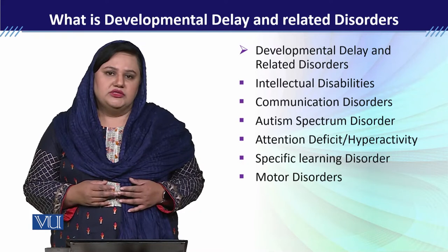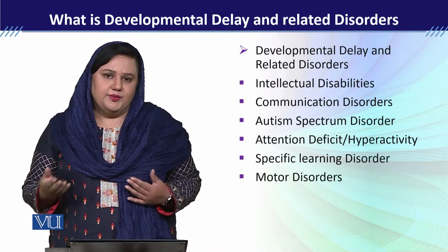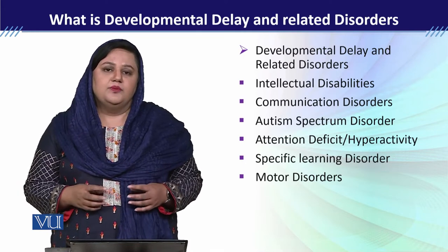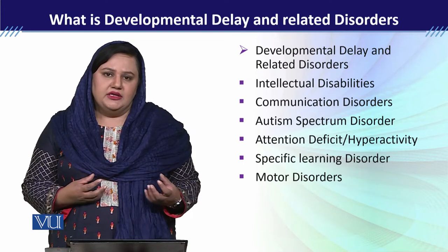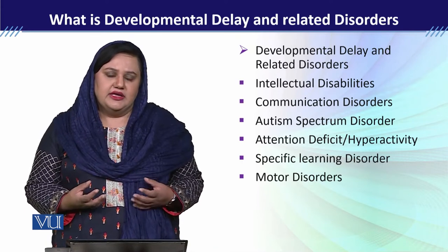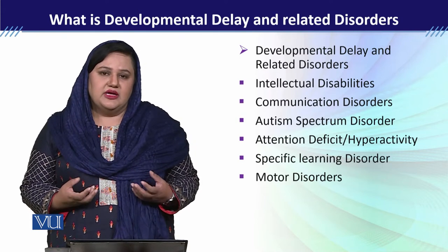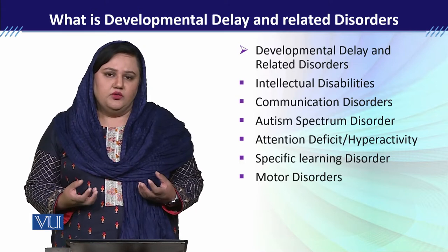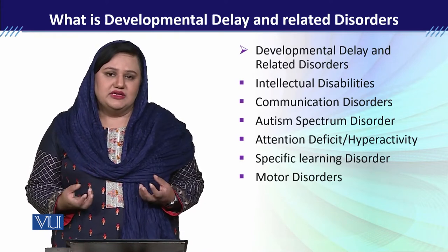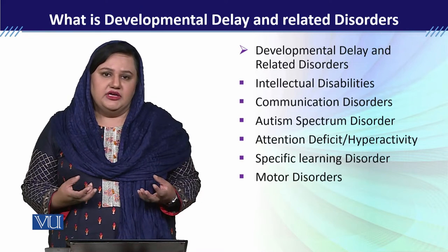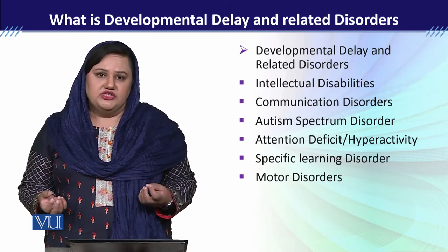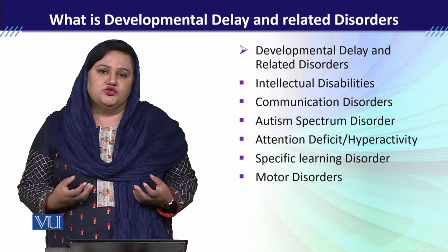If we are talking about the deficit in adaptive functioning, then what does that mean? It means that the child has a deficit at the personal and social functioning level. So when a child has a global impairment in both mental abilities and adaptive functioning, it means that the child has an intellectual disability.